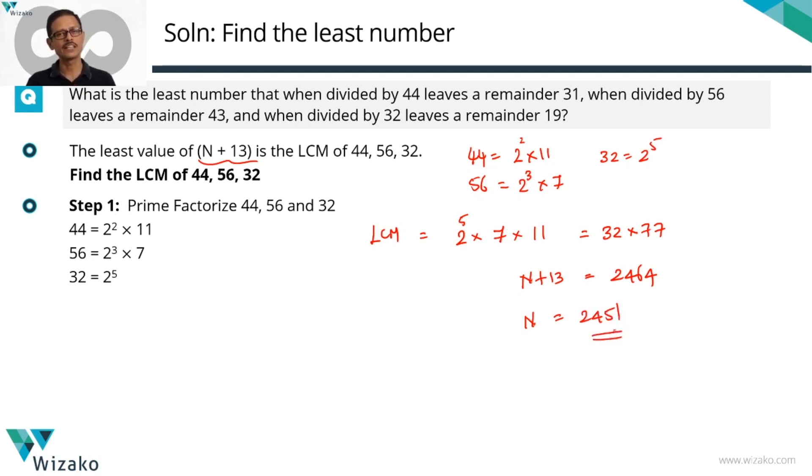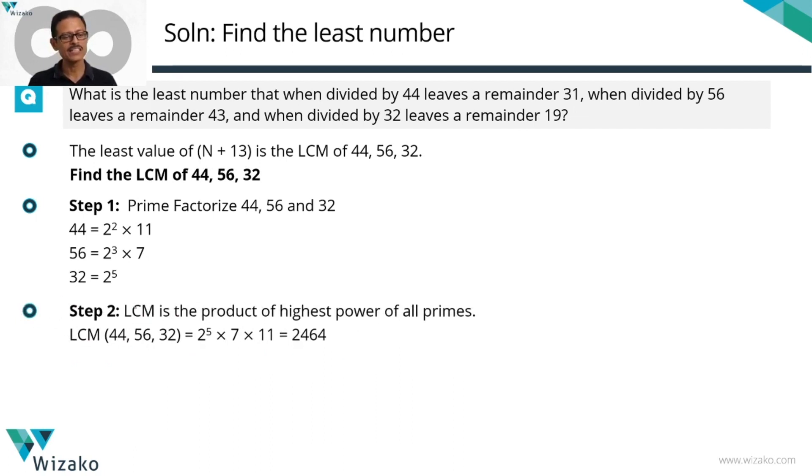Quickly summarize it in a printed form before we move to the second question. Computing the LCM. LCM is a product of the highest power of all primes. So you've taken 2 to the power 5 which is the highest power of 2, 7 and 11. That works out to 2464. 2464 the LCM is N plus 13. So N is equal to 13 less than 2464 which is 2451. So I see is the answer to this question.